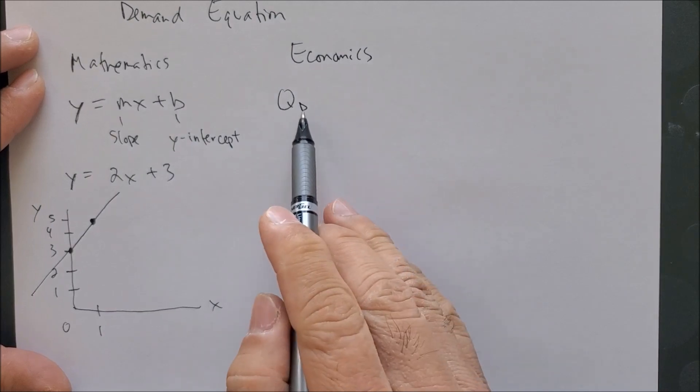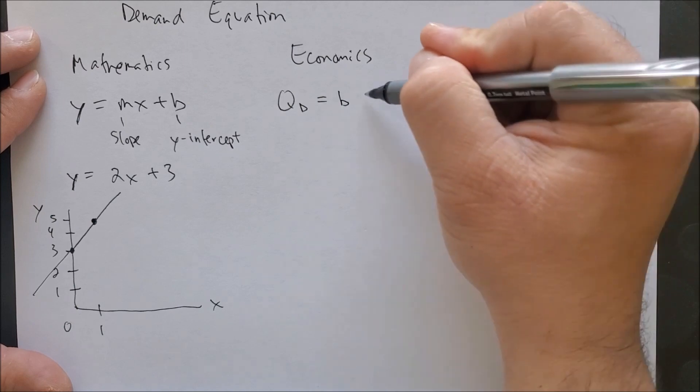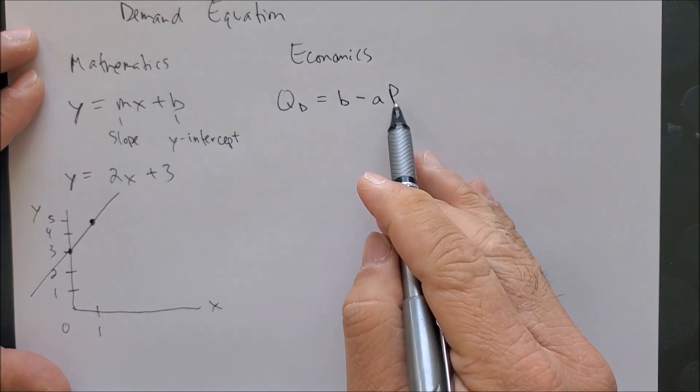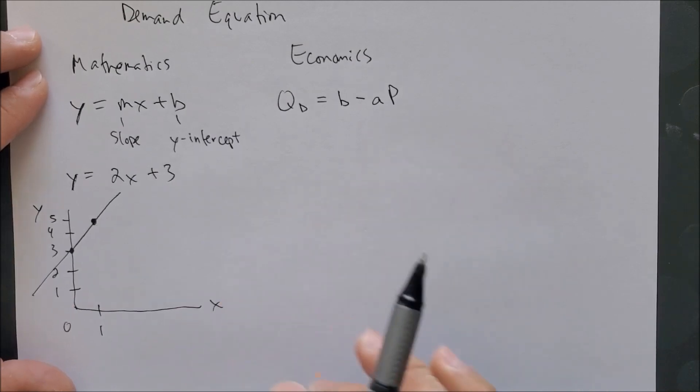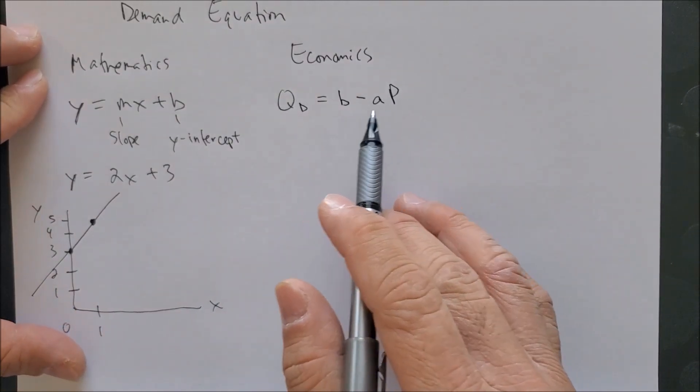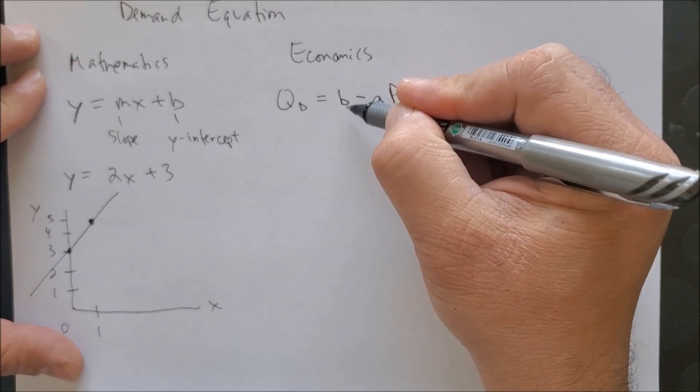we are going to be focusing on q sub d, which would be the demand quantity, is a function of b minus ap, which would be price.